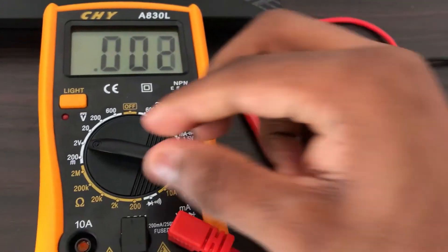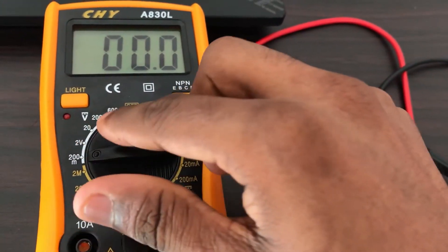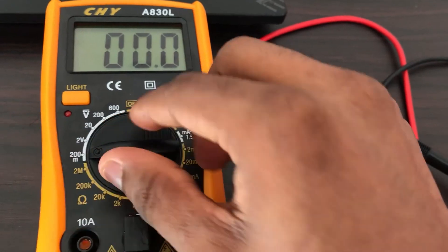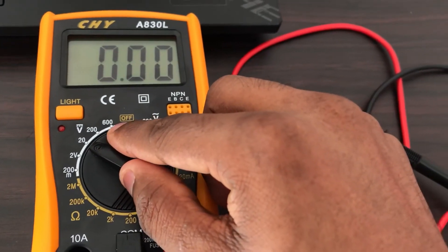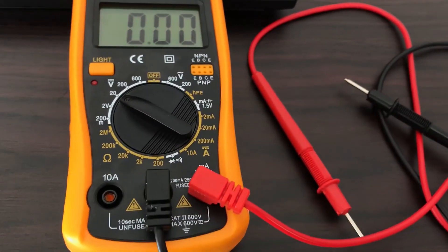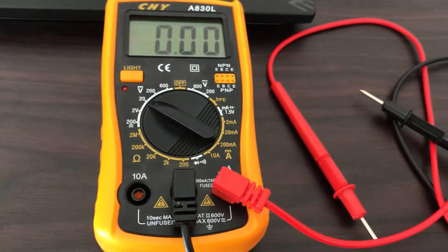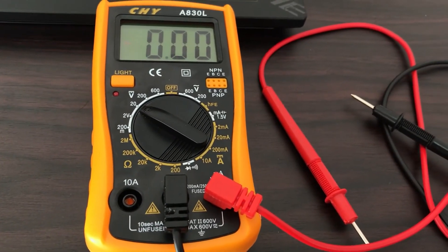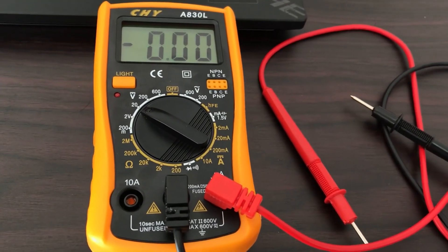Here you can measure the DC voltages from milliampere range to 600 volts DC. This is about the multimeter. Hope you understood something. If you have problems, please leave us a comment. Thank you very much for watching.